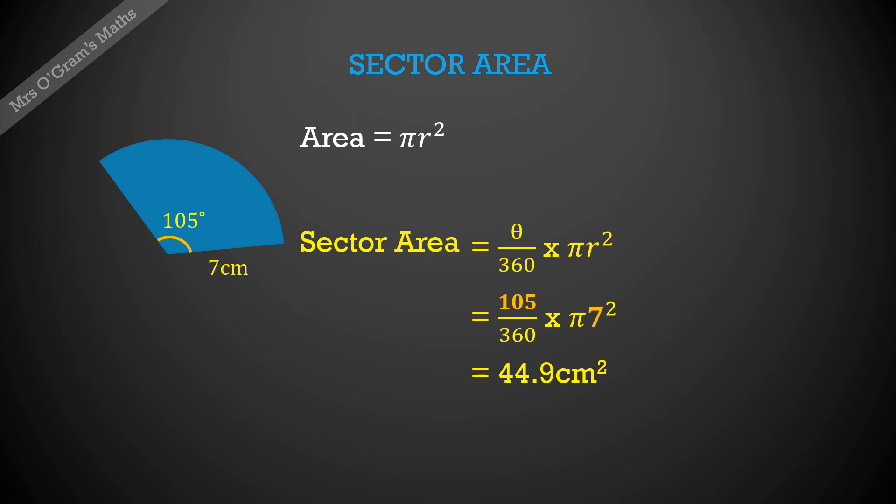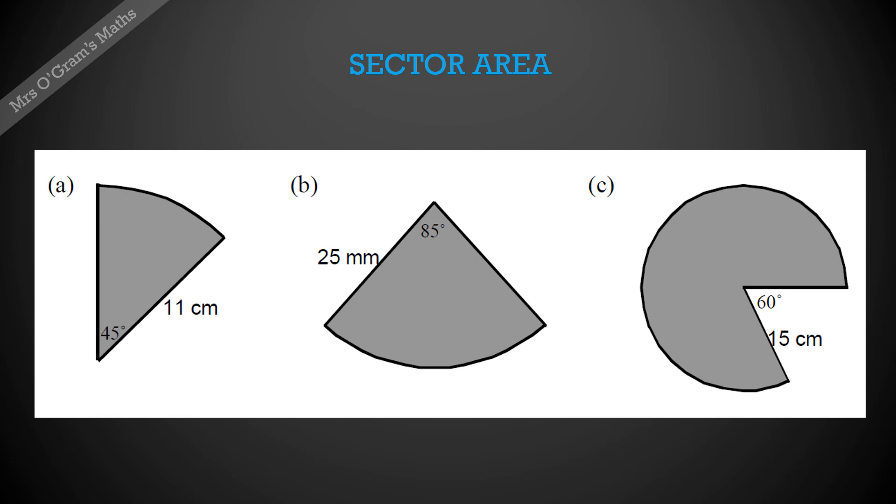So have a go at these three questions. Take your time to work out those calculations, use the formula that was on the previous slide, and you should get the following answers: a is 47.5 centimeters squared, b is 463.6 millimeters squared, and c is 589 centimeters squared. Again, if you've got any of those incorrect, just go back and look at the previous slide and check you're using the formula correctly.